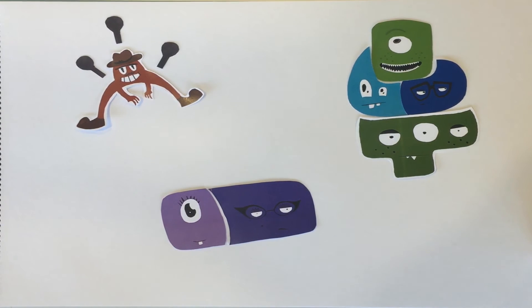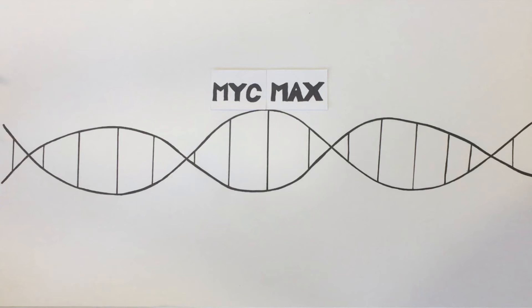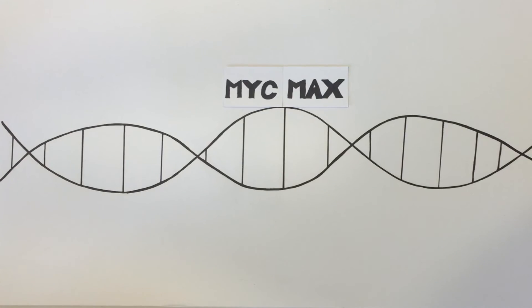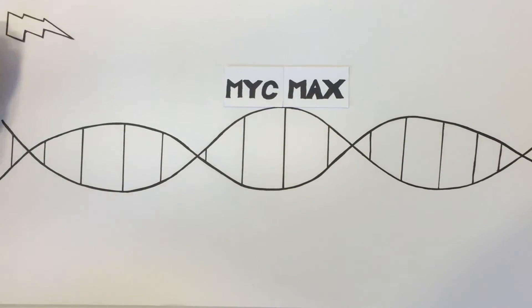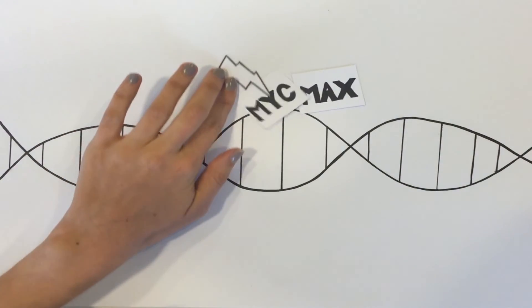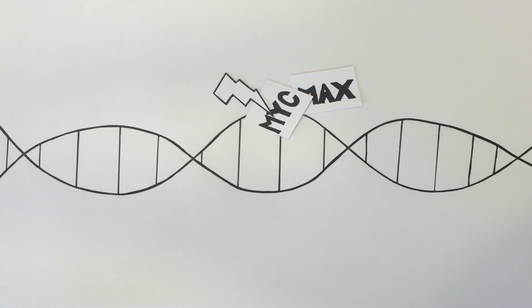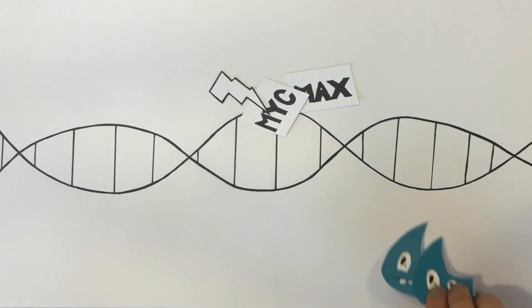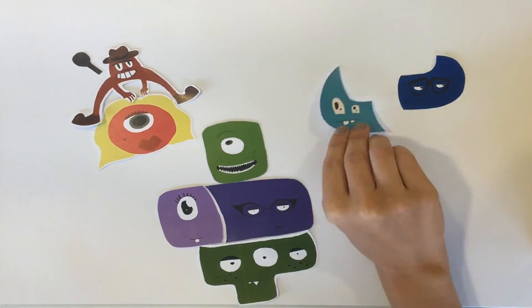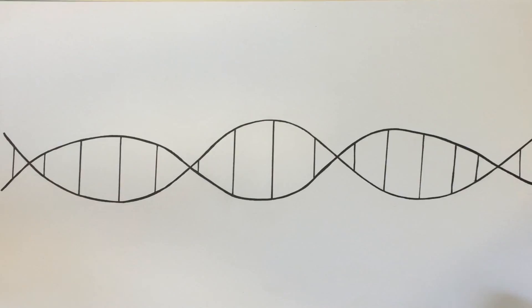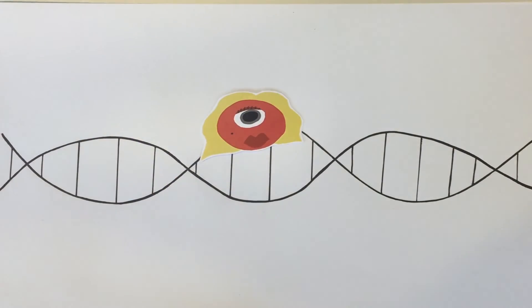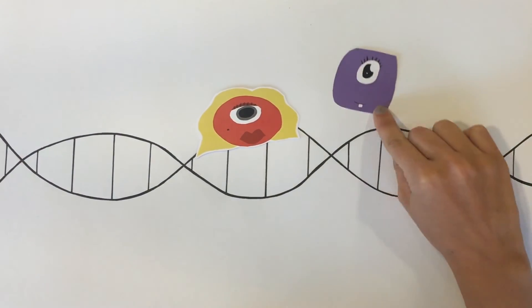The cell is now ready to enter S phase. In cancer, this process can be deregulated at any stage by gene mutations. One common mutation is in the MYC gene. A mutation in MYC could cause gene amplification, which would increase the activity of MYC and increase the production of cyclins and CDKs. This leads to uncontrolled cell proliferation, one of the hallmarks of cancer.